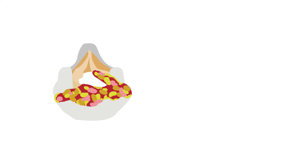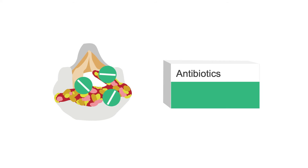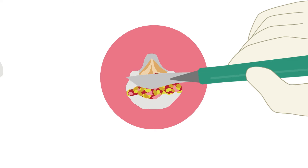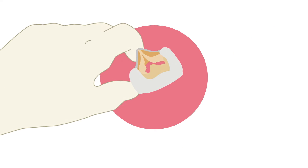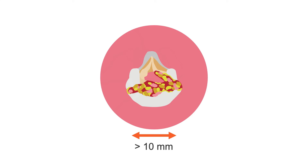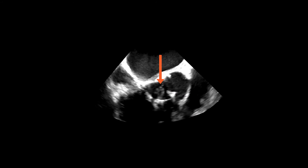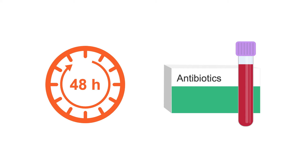The treatment of PVE depends on several aspects. If there are no contraindications, antibiotics are always the first treatment of choice. Additionally, surgical removal and consequent re-replacement of the prosthetic valve is recommended if the vegetation is larger than 10 mm, the vegetation is highly mobile, or the patient has sepsis persisting for more than 48 hours despite effective antibiotic treatment guided by blood cultures.